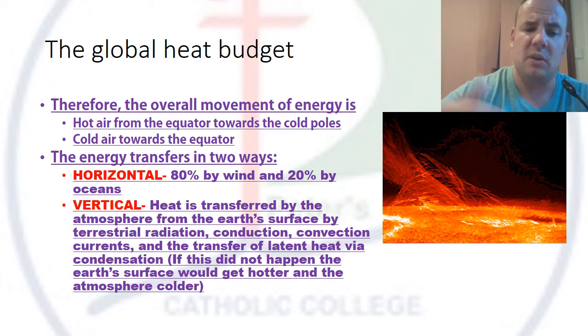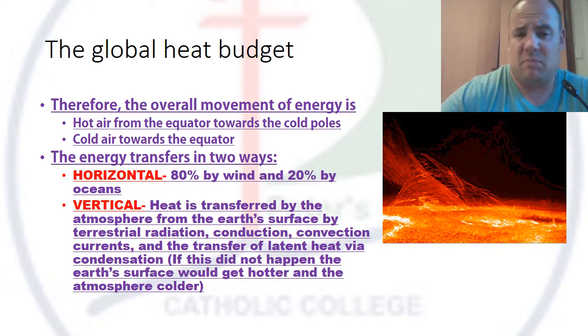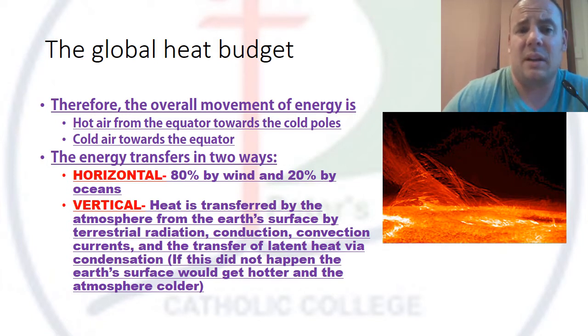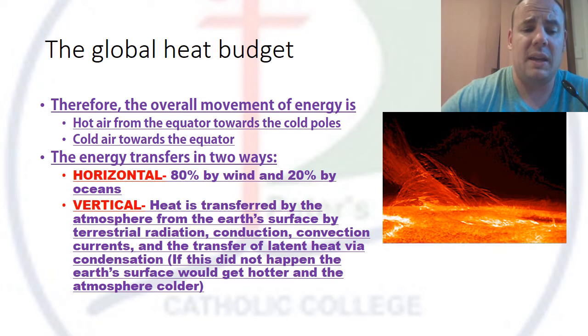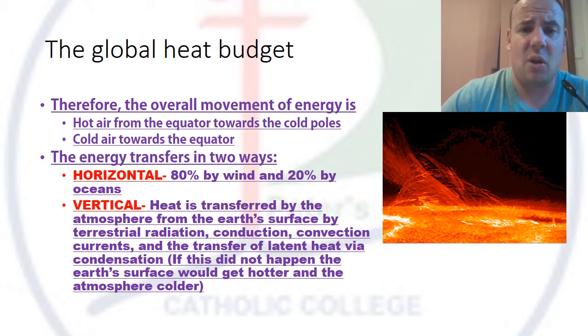For the global heat budget to be consistent, we need both types of movement — horizontal and vertical. If only one happened, the atmosphere would be much colder, and we'd be more likely to get snow where we wouldn't normally expect it.